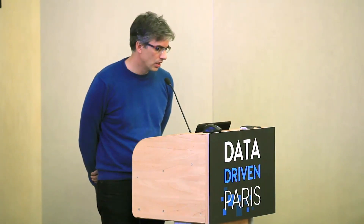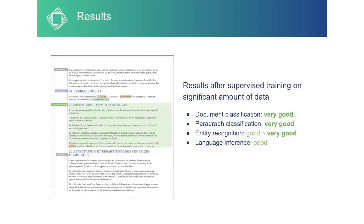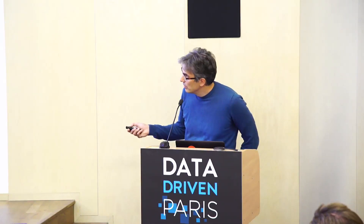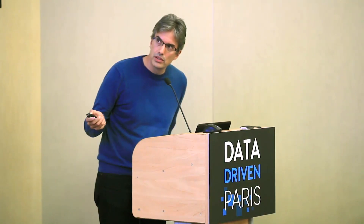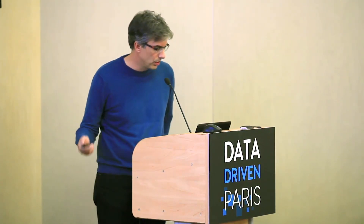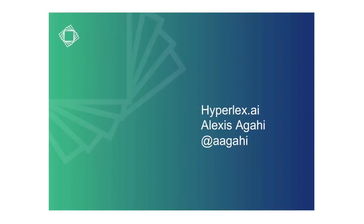For entity recognition and natural language inference, we're sometimes not as good as we'd like — especially for very specialized entities like the address of a headquarters or the amount of a shareholder's capital. Our interface presents predictions to customers, who validate what has been extracted, helping us improve predictions over time — similar to when you tag pictures on Facebook and help them identify you better in future photos.